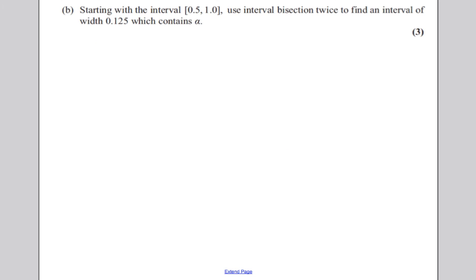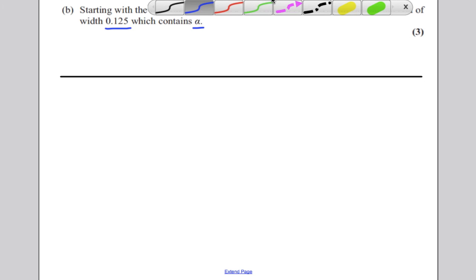Next question, starting with the interval 0.5 to 1.0, use the interval bisection method twice to find an interval of width 0.125 which contains alpha. So always draw out your table for this one, it just makes life a whole lot easier.